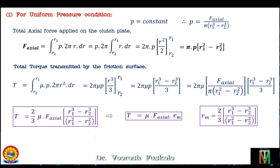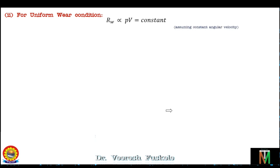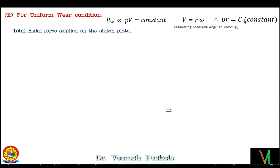For the uniform wear theory, wear in a mechanical system is proportional to the pv factor, where p is contact pressure and v is sliding velocity. For a plate clutch, the constant wear rate R_w is proportional to p×v = constant. Since the velocity at a point on the clutch face is v = r·ω, and assuming constant angular velocity, we can write p×r = constant = c.